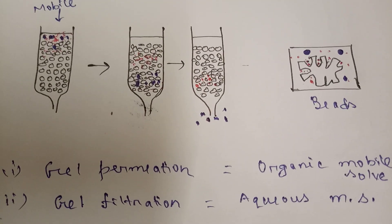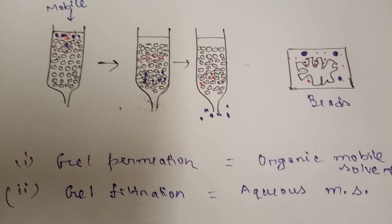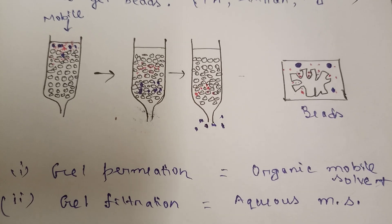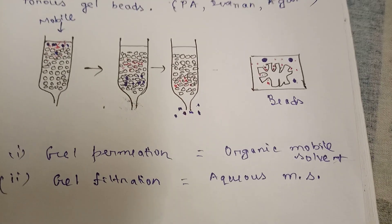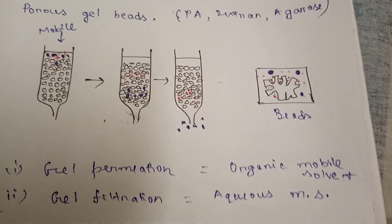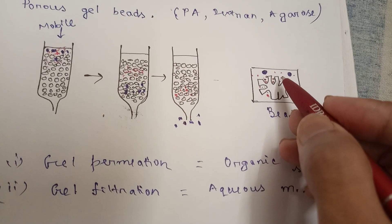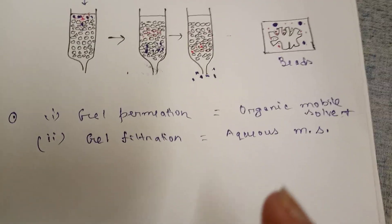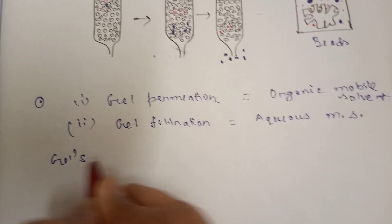The molecular mass of the largest molecule that cannot be accommodated in the pores of a given gel defines the gel's exclusion limit. The smallest molecule that is unable to penetrate the pores of that gel represents the exclusion limit.